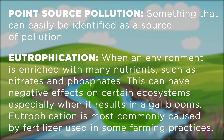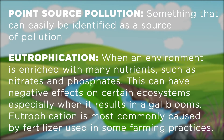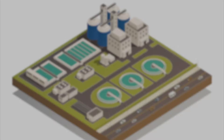Eutrophication occurs when an environment is enriched with nutrients. This can be problematic when algal blooms are caused, because when algae die they are decomposed by bacteria that remove oxygen from water.